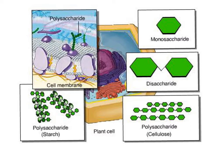Among the functions of polysaccharides, we can use them as a source of energy, such as starch, and also as part of the structure of a plant, like cellulose. Carbohydrates attached to proteins or lipids in cell membranes help cell-to-cell recognition and also the recognition of specific molecules, triggering physiological processes such as fertilization, cell growth, and immune processes.